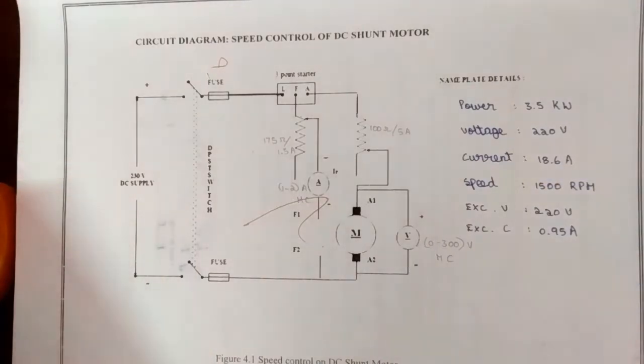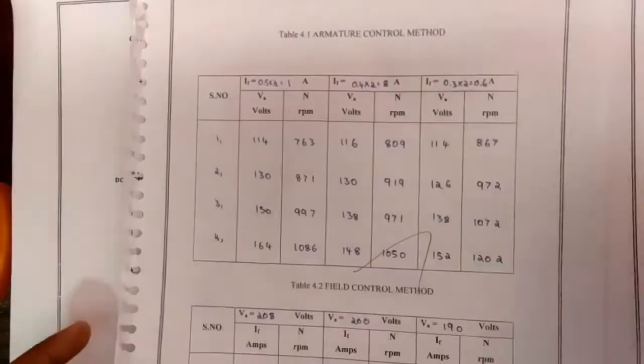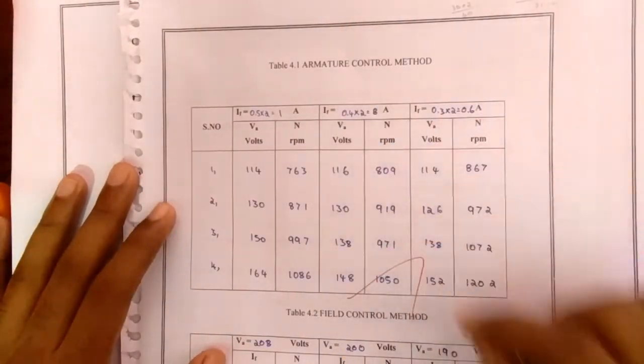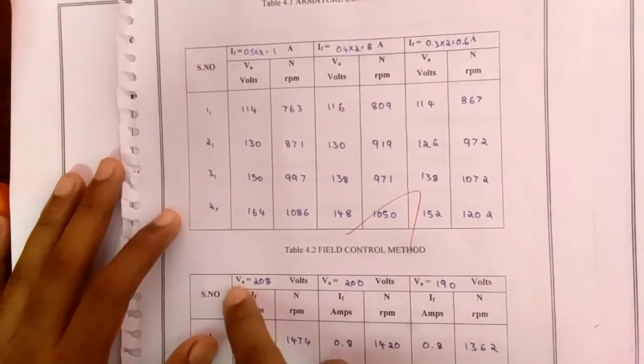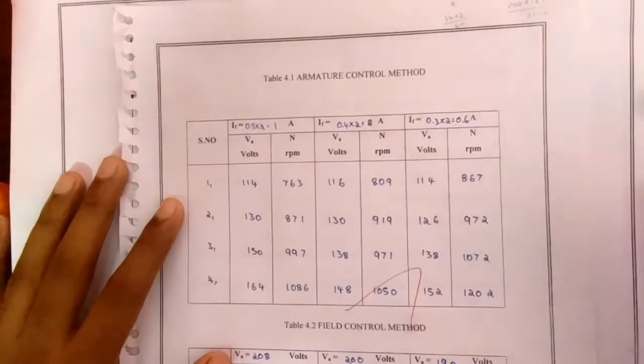And finally, we're gonna plot a graph between Eb and the speed of the motor. So the final tabular column will be like this for the armature control method. For field control method the voltage is maintained constant, but for the armature control method current is maintained constant.